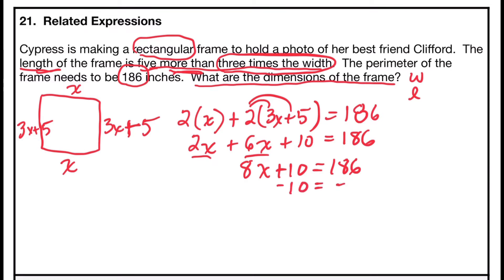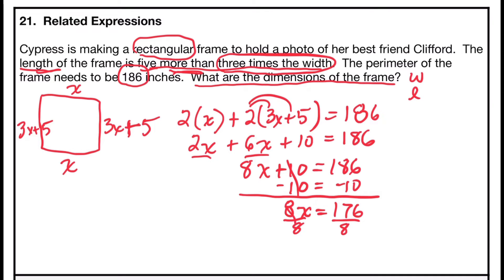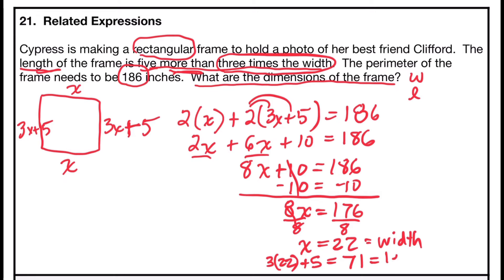Now a two-step: subtract 10 from both sides. 10 minus 10 cancels out, leaving 8x equals 176. Dividing both sides by 8: 176 divided by 8 is 22, so x equals 22 — the width is 22 inches. To find the length: 3 times 22 plus 5. 3 times 22 is 66, and 66 plus 5 is 71. So the length of the frame is 71 inches.